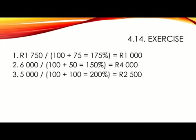Number 3, 5,000 divided by 100 plus 100, or 200%, gives you 2,500 Rand.